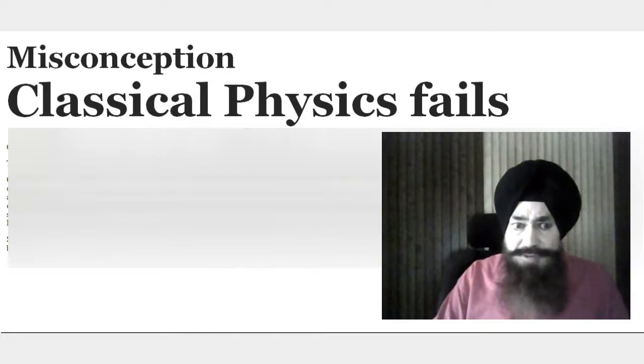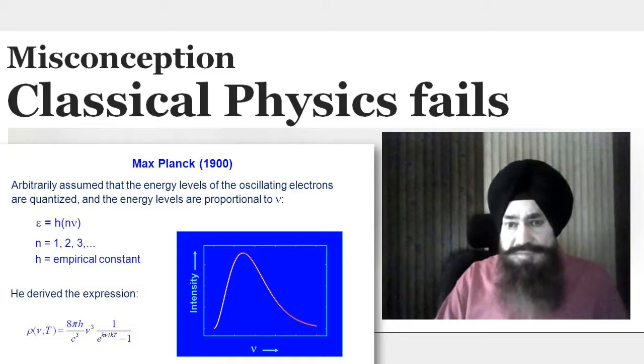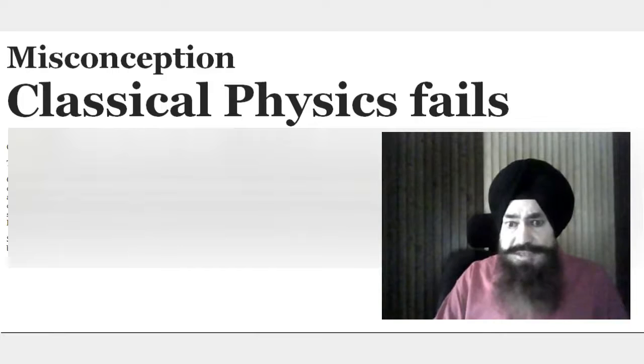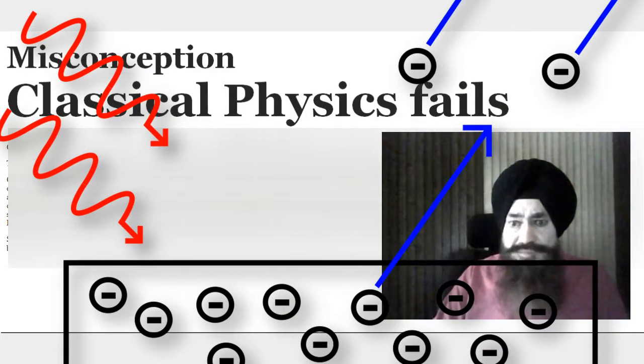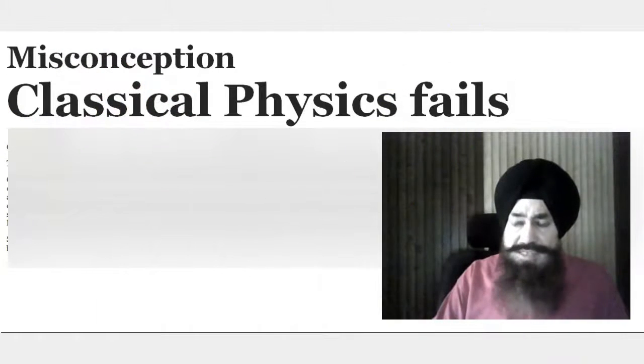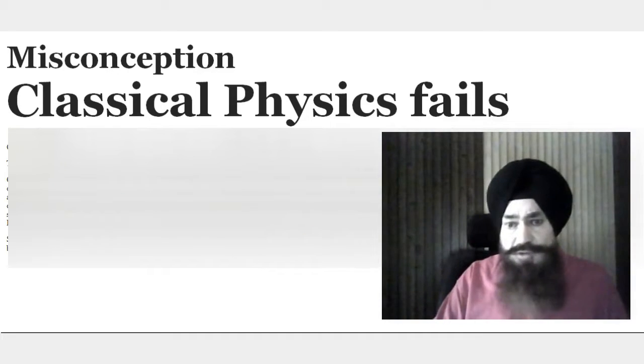Max Planck speculated that energy levels were quantized, and that accounted for what was seen. People could not account for a simple observation called the photoelectric effect. Einstein postulated that energy of light was quantized, and that accounted for the observations.